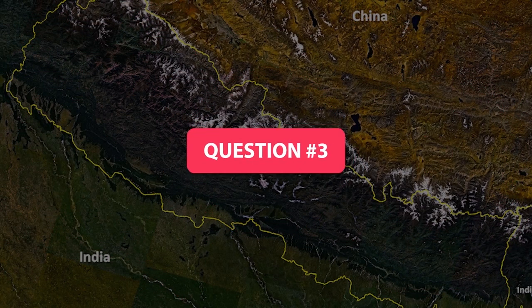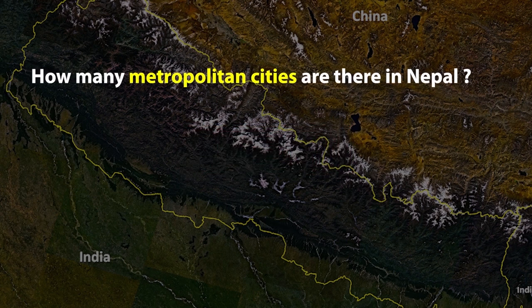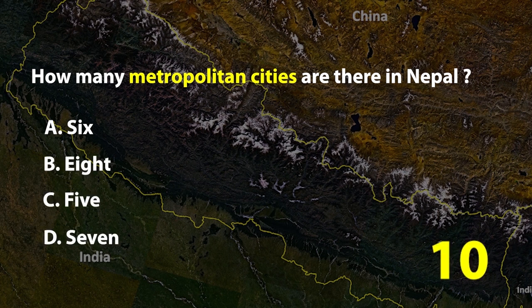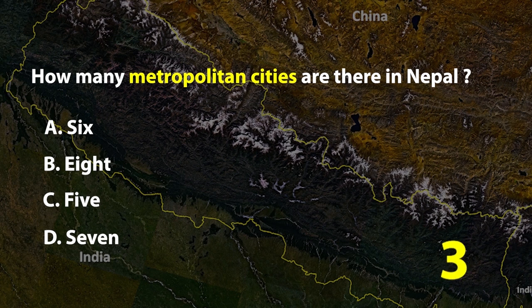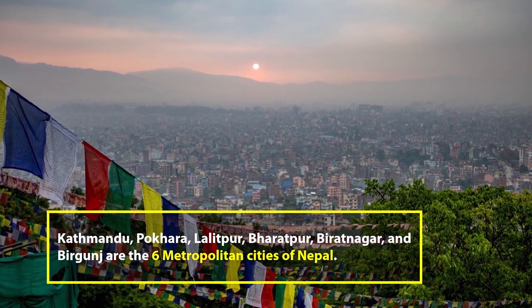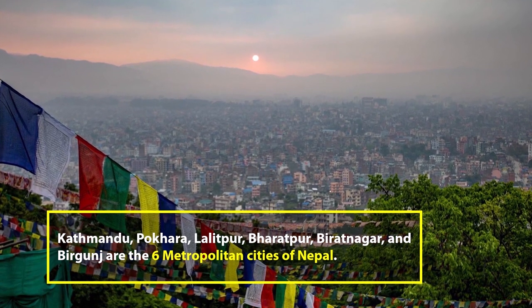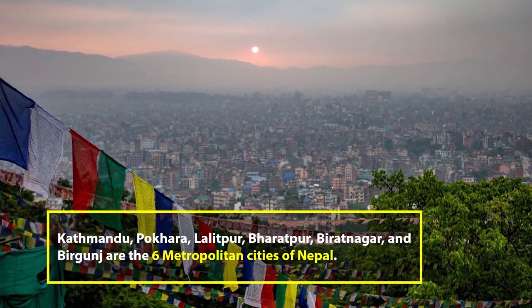Question number 3. How many metropolitan cities are there in Nepal? A. 6, B. 8, C. 5, or D. 7. The right answer is A. 6. Kathmandu, Pokhara, Lalitpur, Bharatpur, Biratnagar and Birgunj are the 6 metropolitan cities of Nepal.